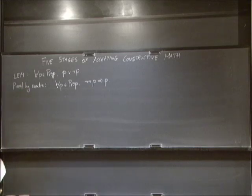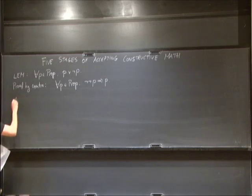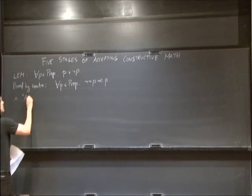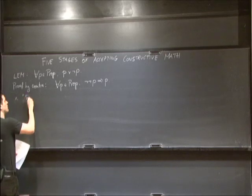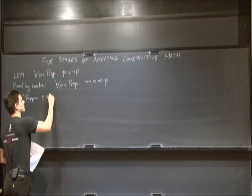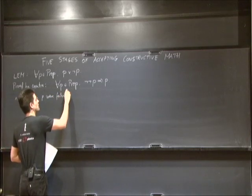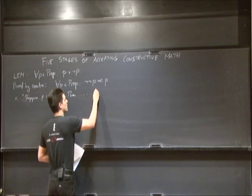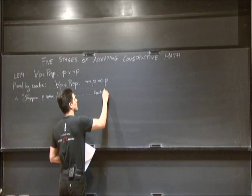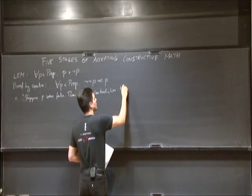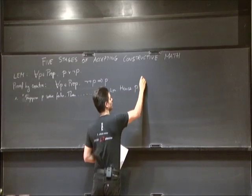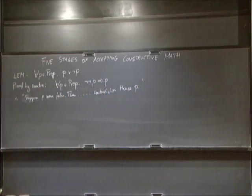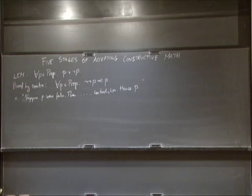The first form of proof by contradiction goes: suppose P were false, then [reasoning], contradiction, hence P holds. That's what proof by contradiction looks like — you want to prove P, you suppose it's false, derive a contradiction, and conclude P is true.